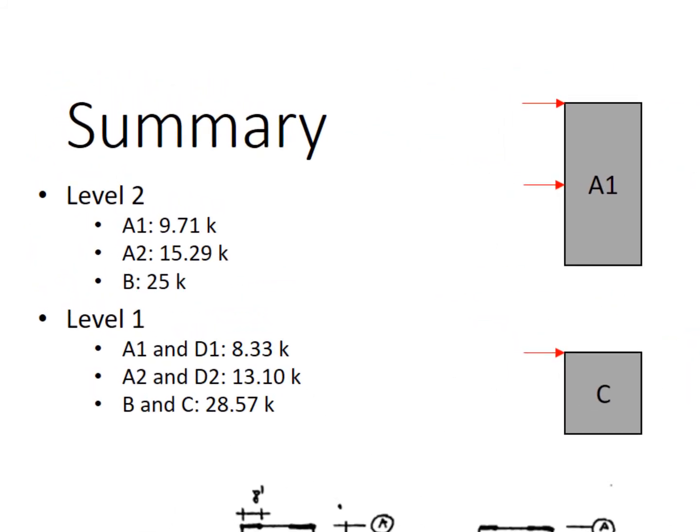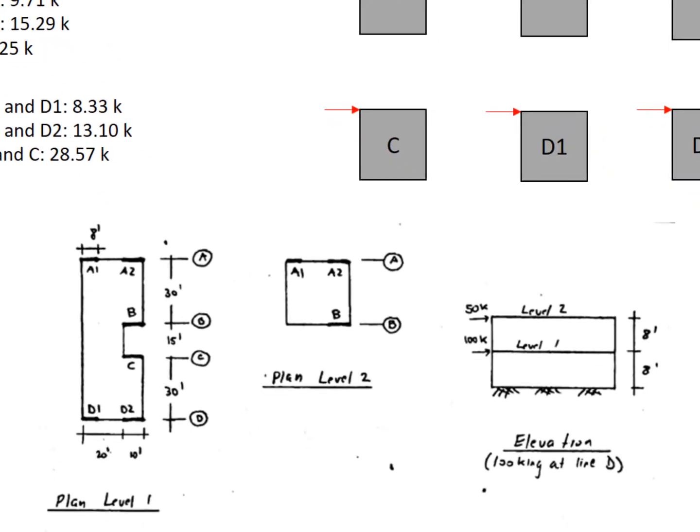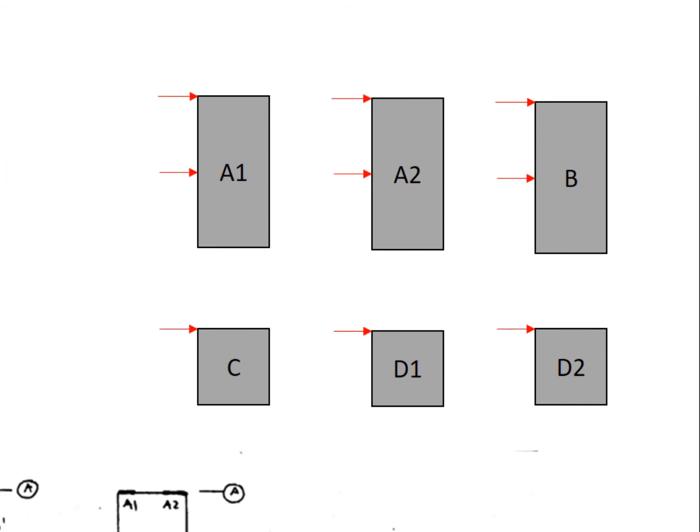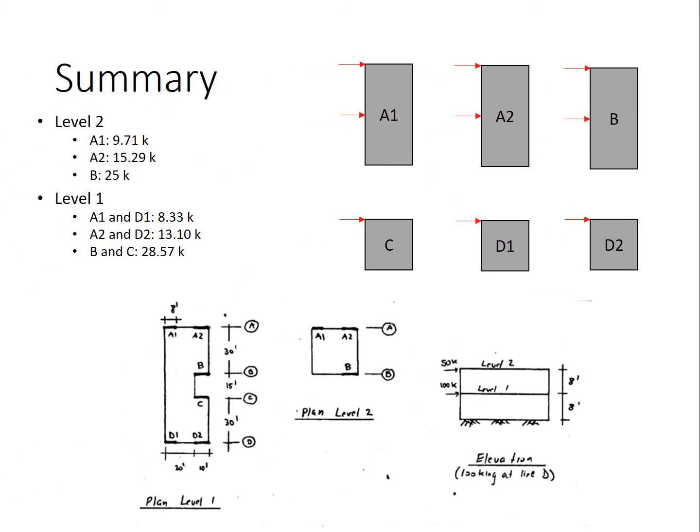So what I'm showing first of all on the upper left hand side are the summaries for all the forces that we found so far. The values for B on level 2 and B and C on level 1 we found in the previous video. The values for lines A1 and A2 and D1 and D2 on both levels we just found in this video. At the bottom of the page I've reproduced the planned views and the elevation. And on the upper right I've shown the individual walls and the forces that are acting on them.